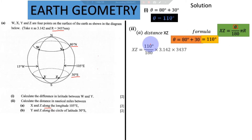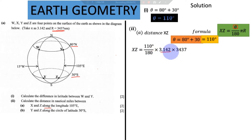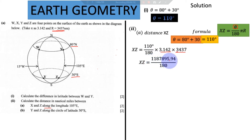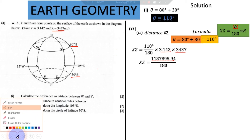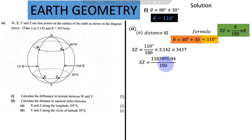We substitute into the formula: where there is theta we put 110, where there is pi we put 3.142, and where there is radius we put 3437 nautical miles, all divided by 180. Get your calculator and multiply 110 by 3.142 by 3437, then divide by 180 to get the answer.